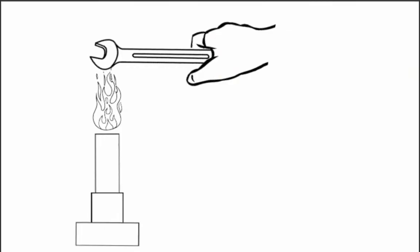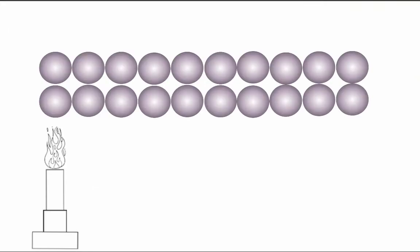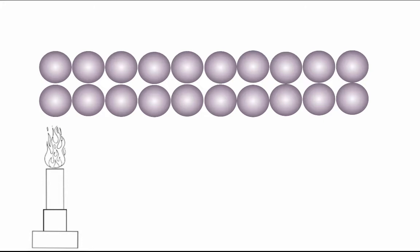First we need to think about what's happening at a particle level. So let's look at this diagram here and let's imagine these silver balls are the particles that are within the spanner making it up. Now if we are heating those particles the one closest to the flame is going to heat up first, and when we talk about heating we're talking about increasing the kinetic energy.